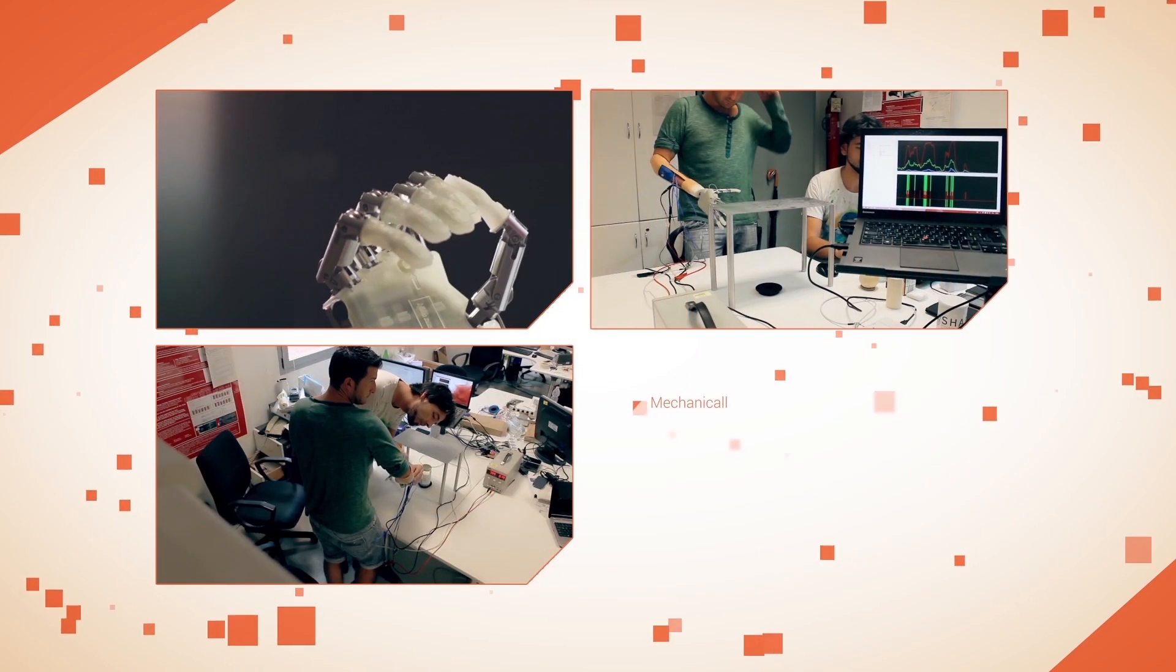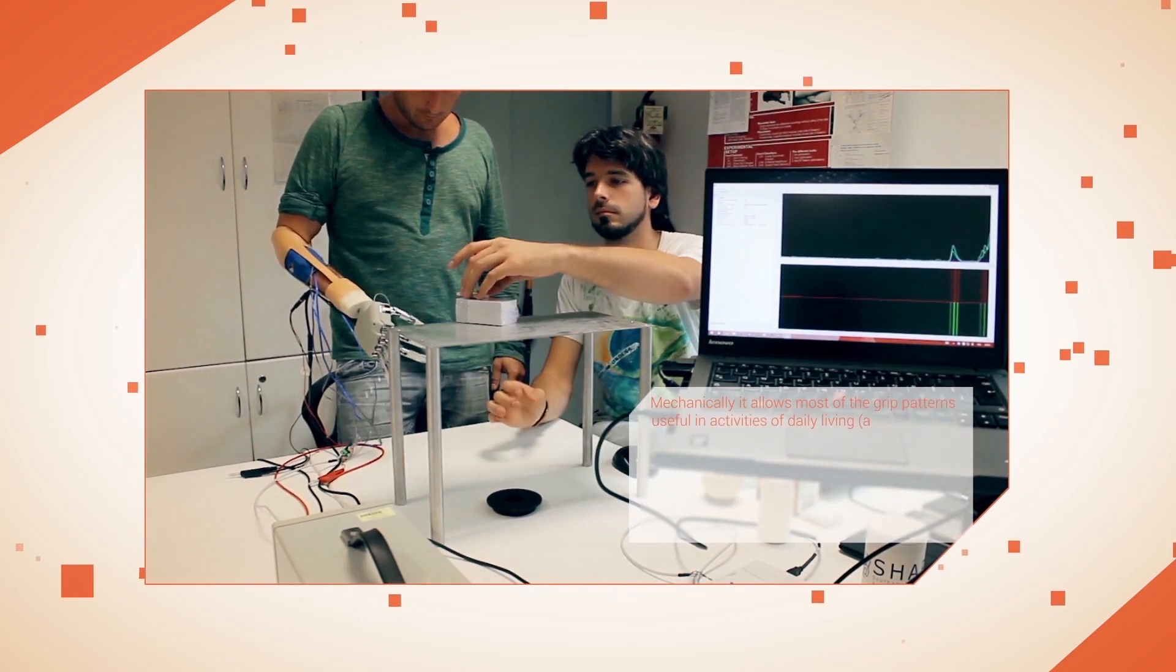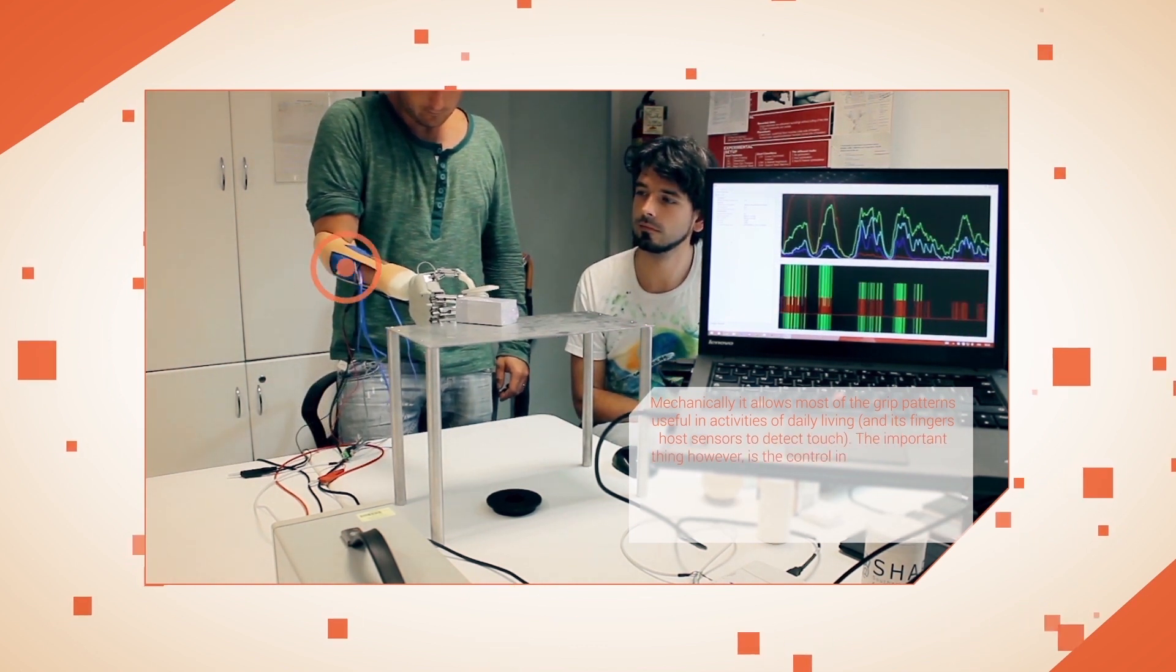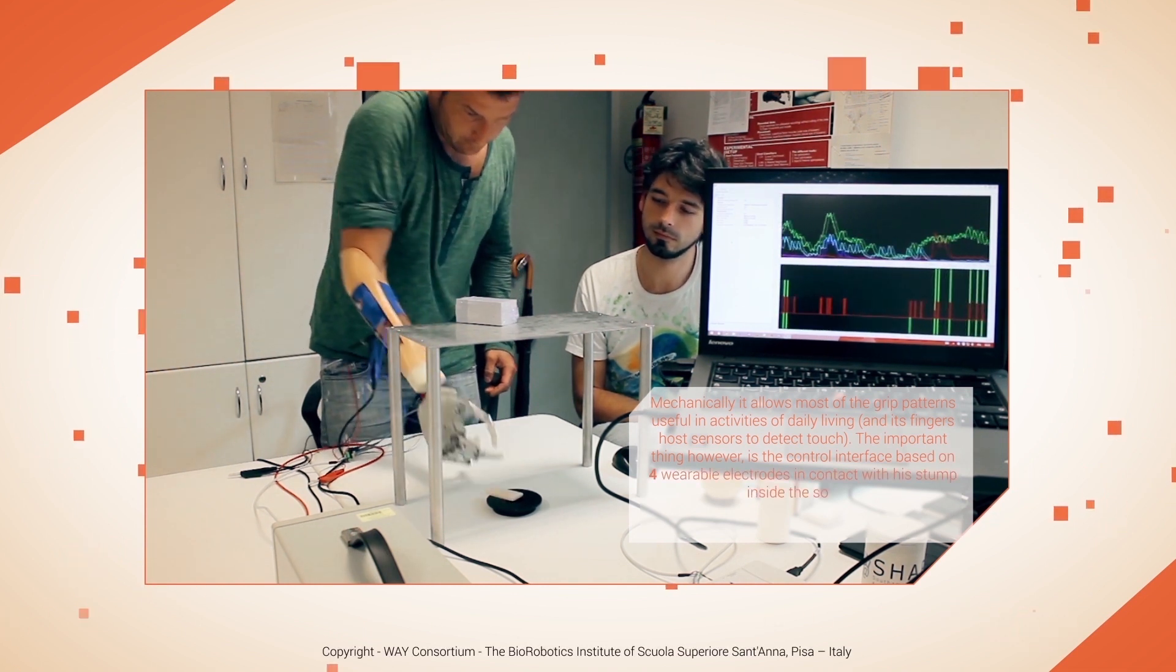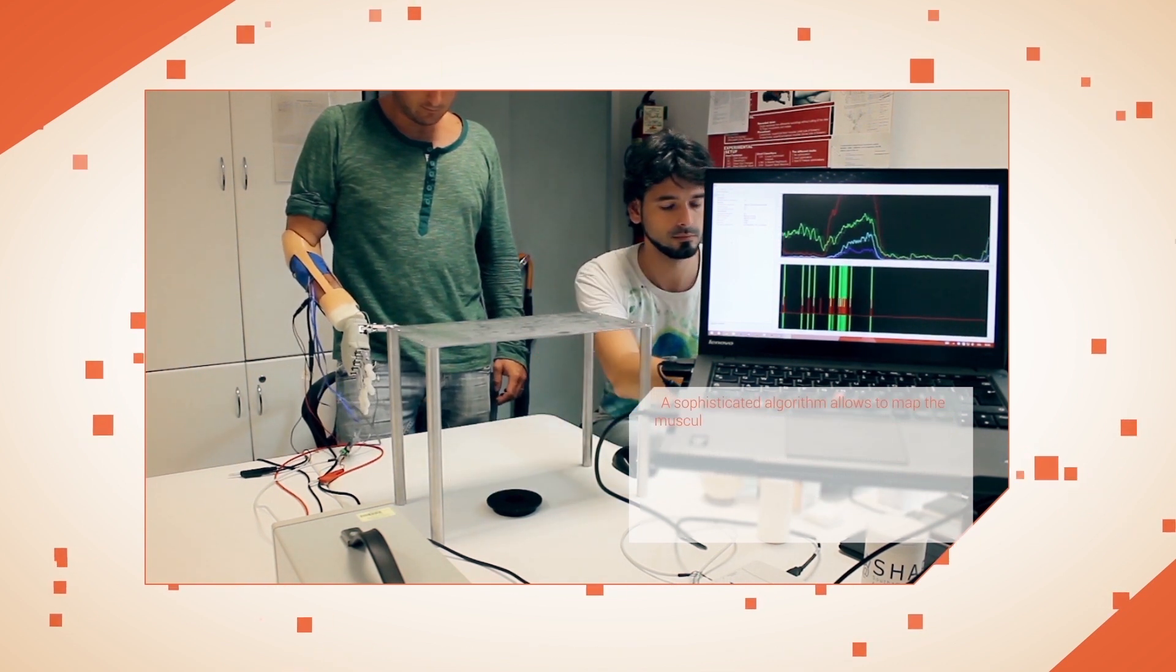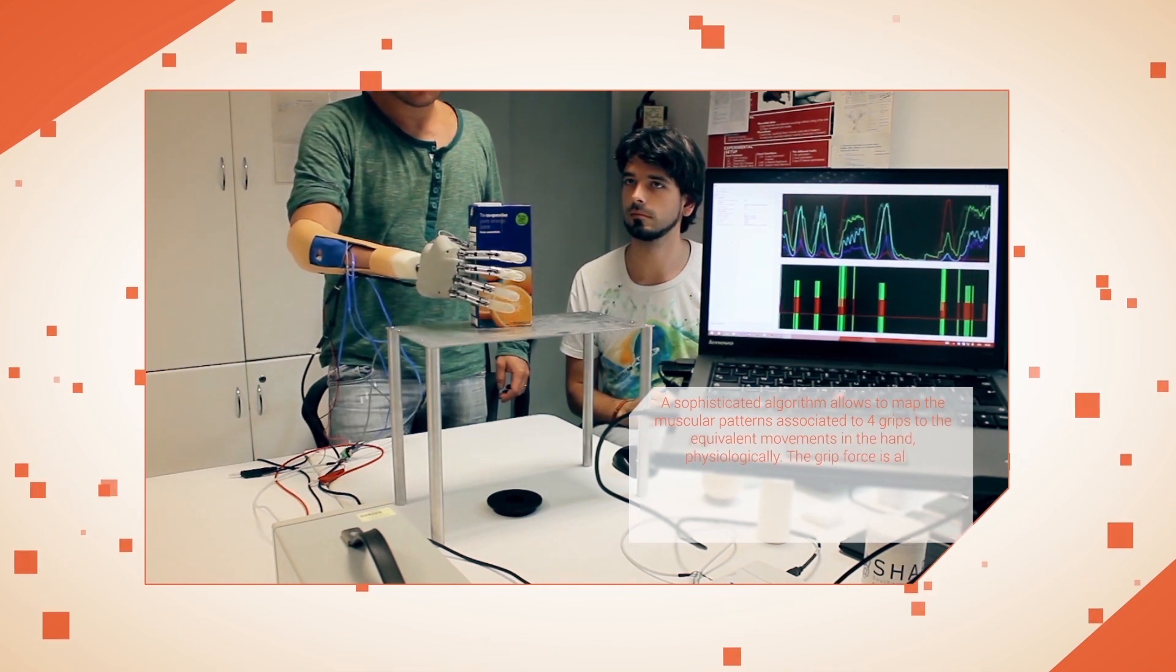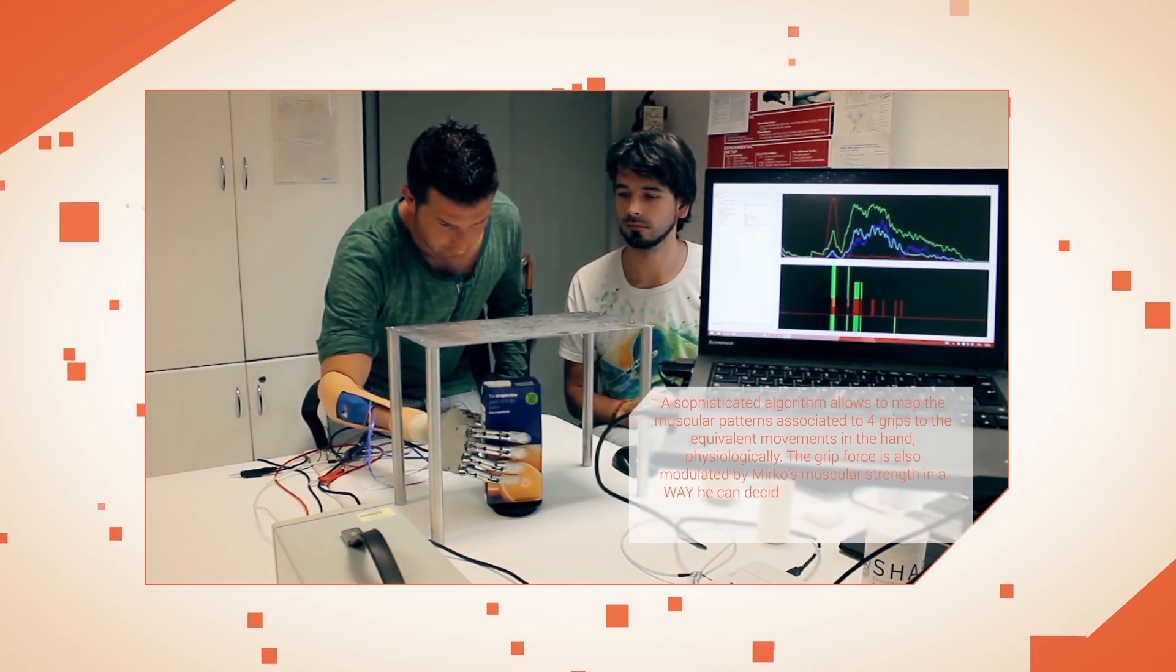The hand he is controlling is one of the most advanced multifunction hands developed at this institute. Mechanically, it allows most of the grip patterns useful in activities of daily living, and its fingers host sensors to detect touch. The important thing, however, is the control interface based on four wearable electrodes in contact with the stump inside the socket. A sophisticated algorithm allows mapping the muscular patterns associated to four grips to the equivalent movements in the hand.